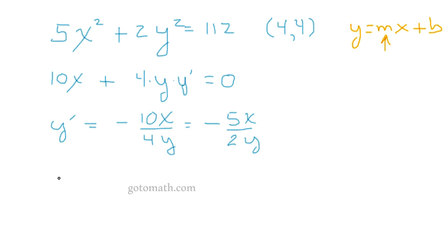So to find this slope all we need to do is plug this point in. So we have 5 times 4 for x and 4 for y. So we have -20 over 8. And these guys can cancel out. So we'll end up with -5/2, which is interesting.